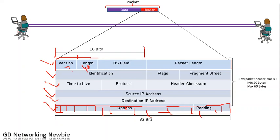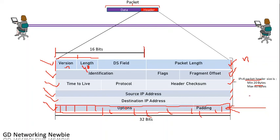For example, the version field has 4 bits, the length field has 4 bits, and the DS field has 8 bits. The packet length field has 16 bits to represent it. The IPv4 packet header minimum size is 20 bytes — since each 32-bit row equals 4 bytes, and there are five rows, that gives 4 + 4 + 4 + 4 + 4 = 20 bytes. There is also an optional field: if present, the header size increases; if absent, the minimum size remains 20 bytes.